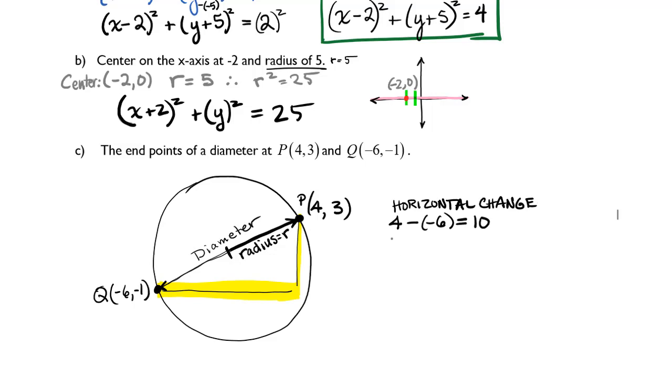Now let's find the change vertically. If we look for the vertical change, we would take the y coordinates, so 3 minus negative 1. That's going to give me a vertical shift from one point to the other of 4. Now I know that a squared plus b squared equals c squared.